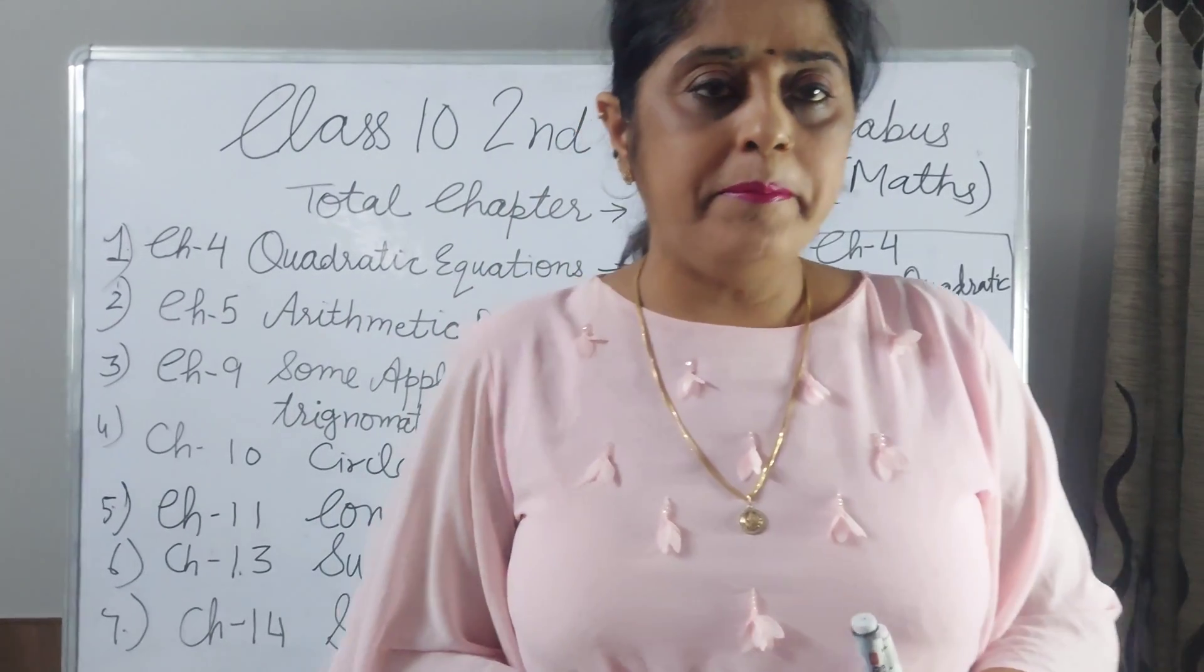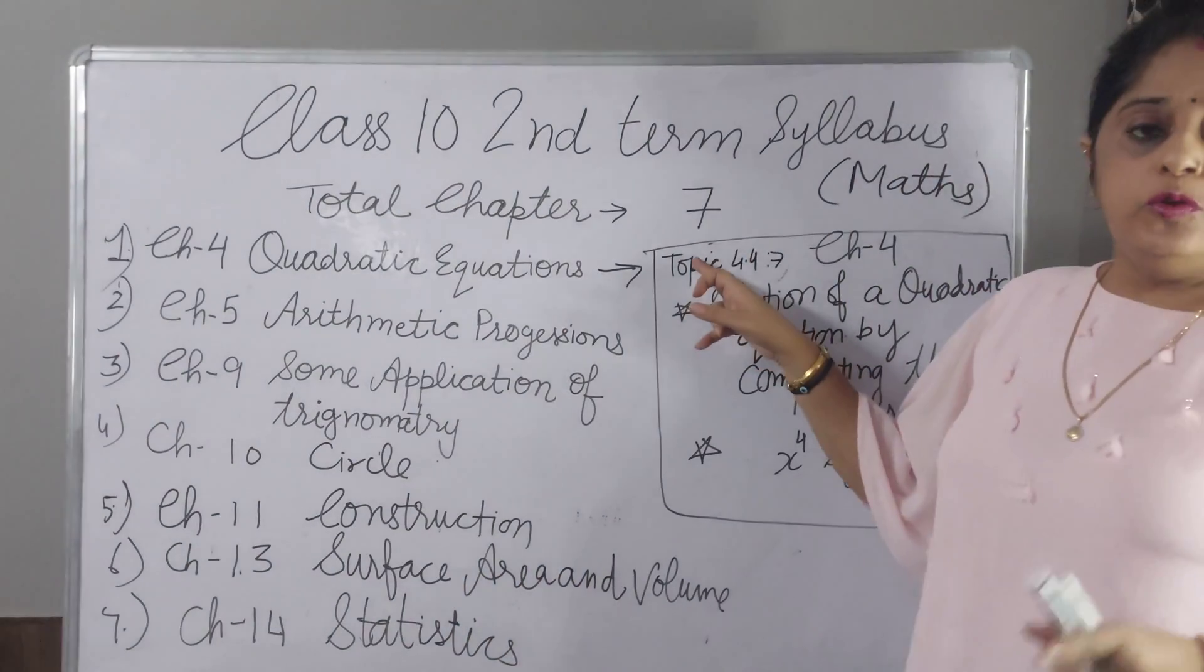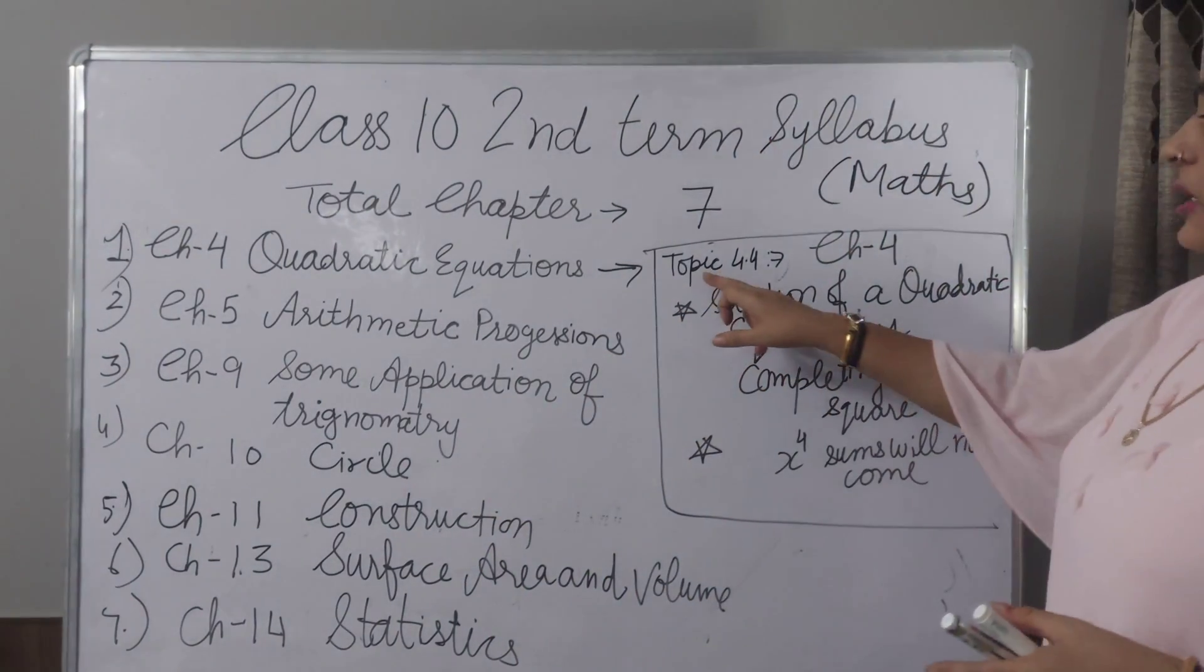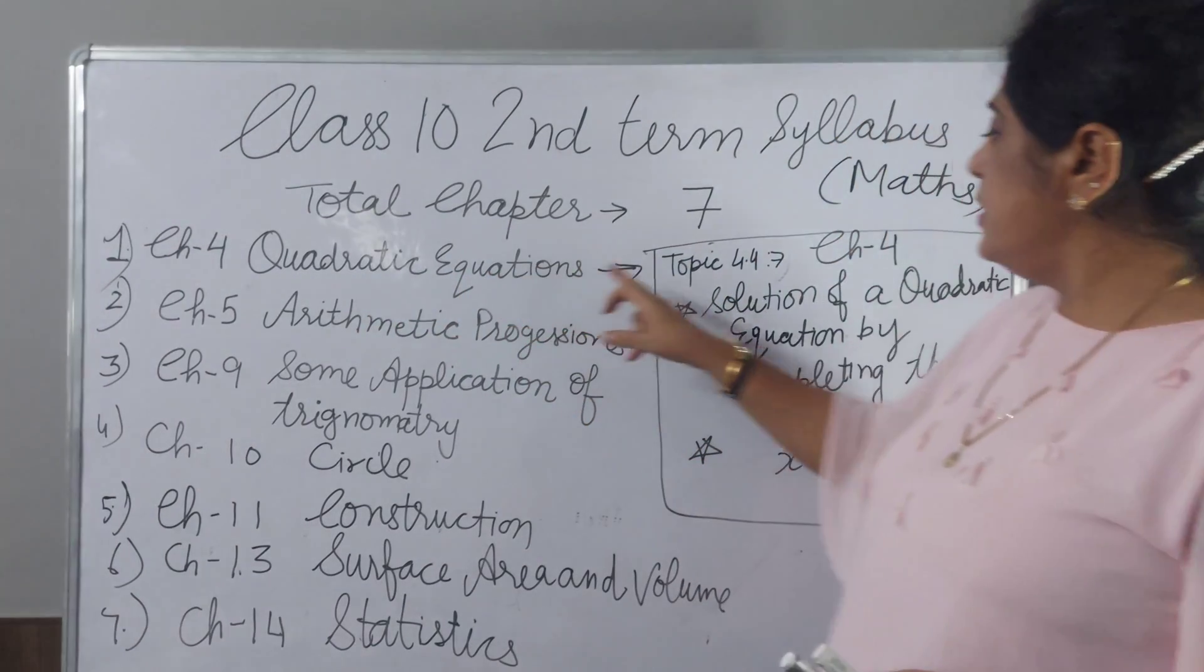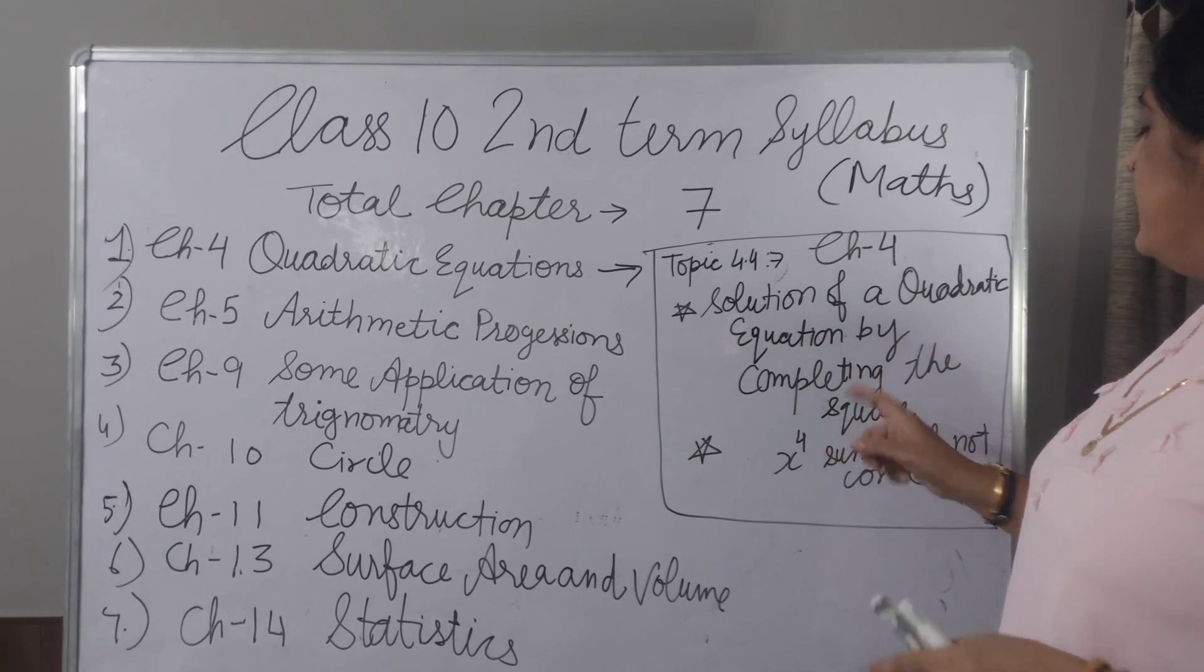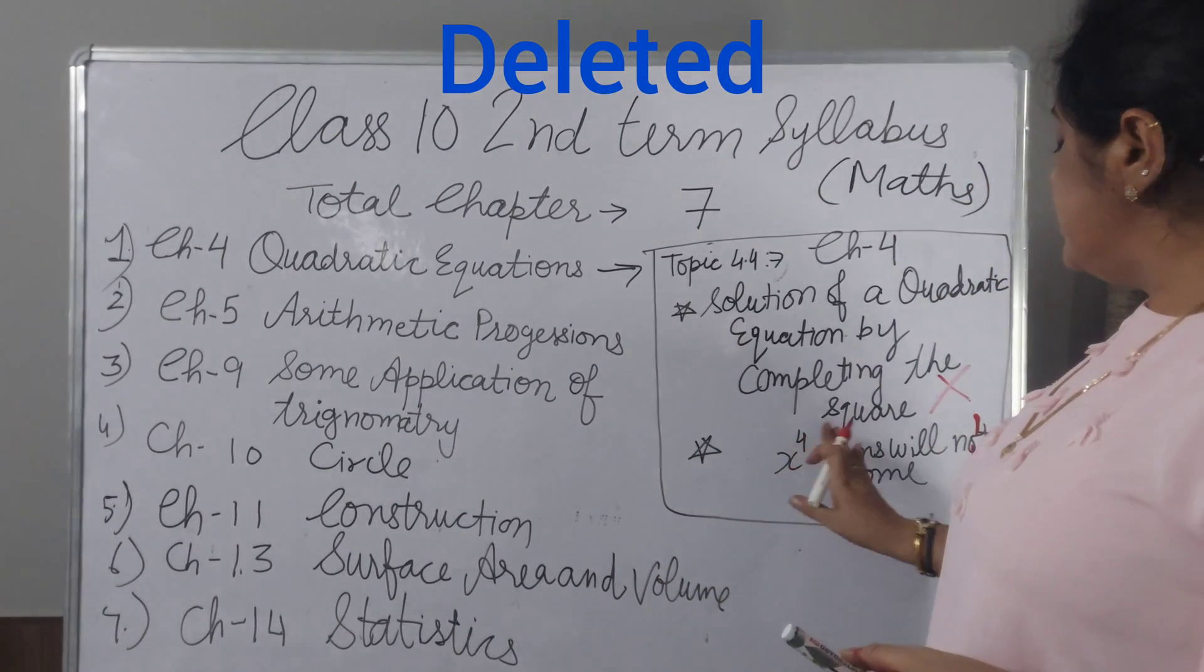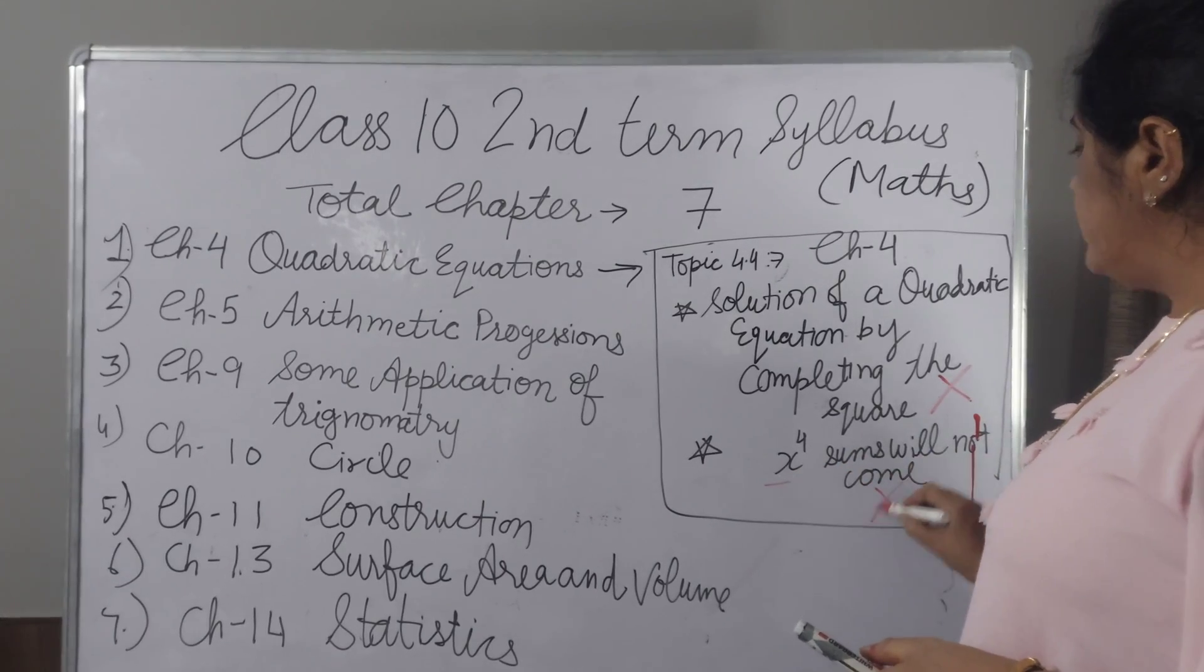Now I am discussing Chapter 4 Quadratic Equation. You can check your math book and please take your copy and pen if you want to write. Topic 4.4 in Chapter 4 Quadratic Equation, Solution of a Quadratic Equation by Completing the Square, that will not come. Do not prepare this. Quadratic Equation by Completing the Square, that type of sum will not come.